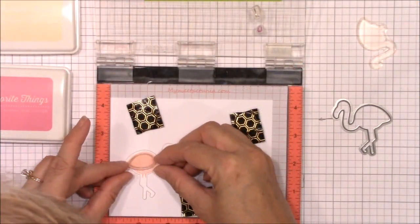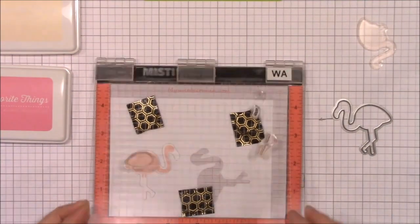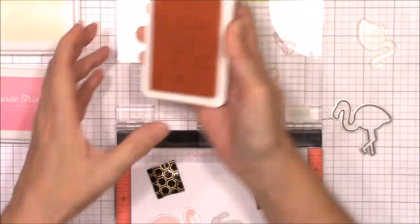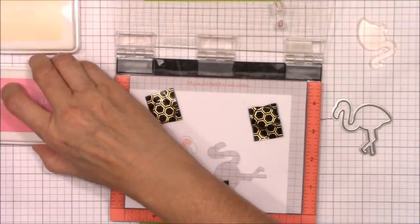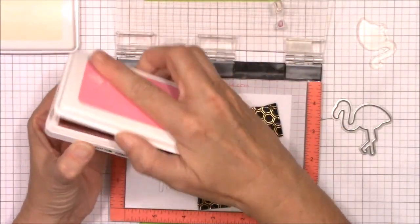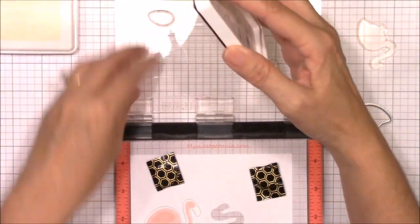To give the flamingo's wings some depth, I stamped it first with a layer of pink bubblegum dye ink and then I inked up just the upper portion of the wing with some cotton candy dye ink. This created a more realistic shadow on the flamingo's wing.